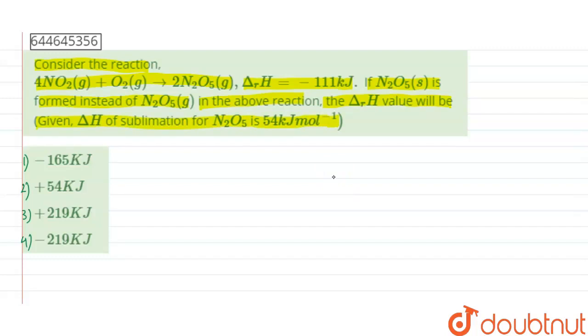Now, here given that 4NO2 gas plus O2 which is also in gas state gives 2N2O5 gas and the heat change for this reaction given as minus 111 kJ.